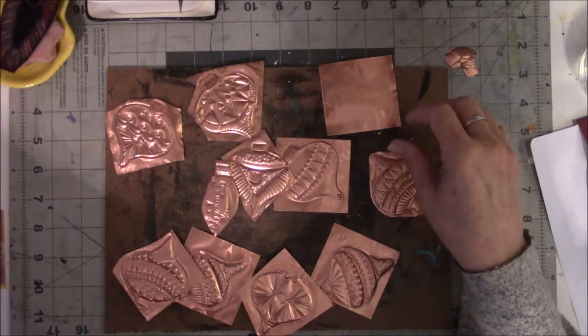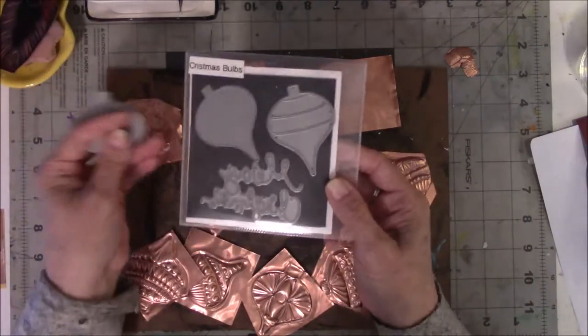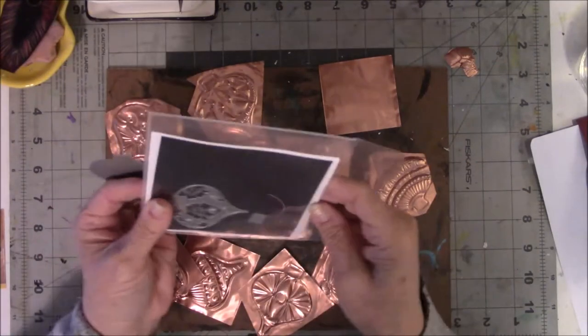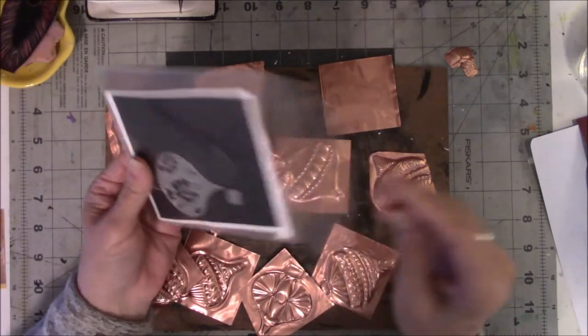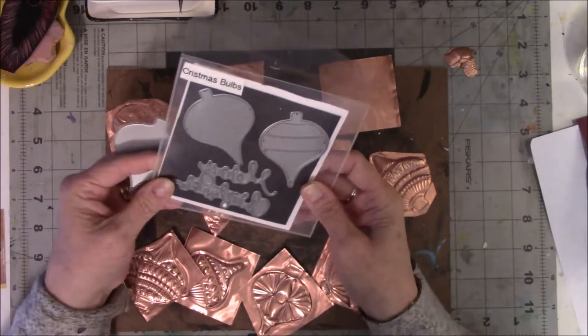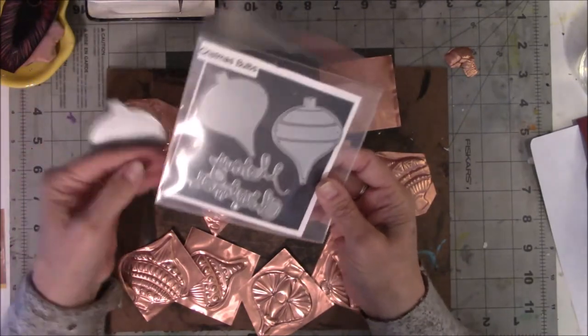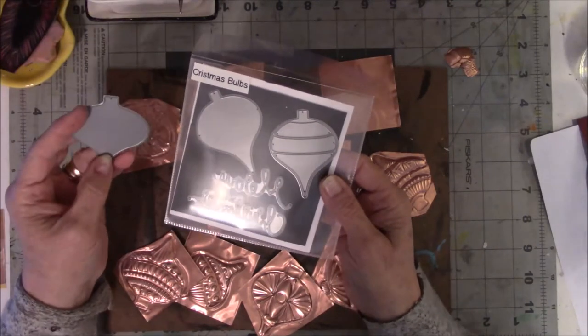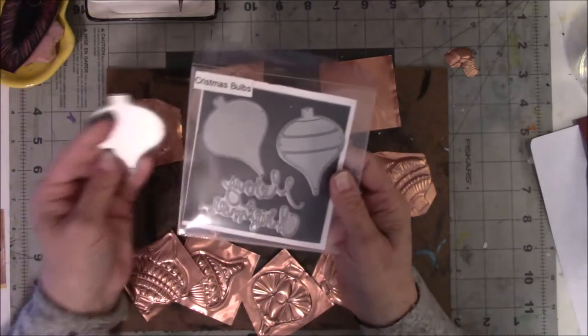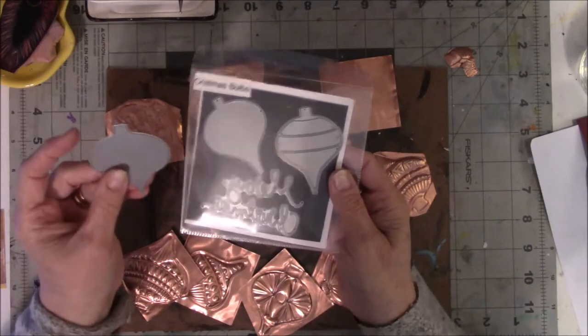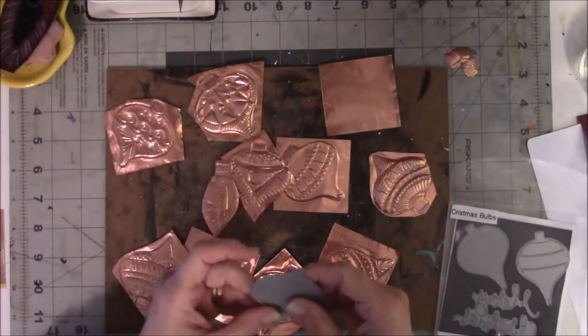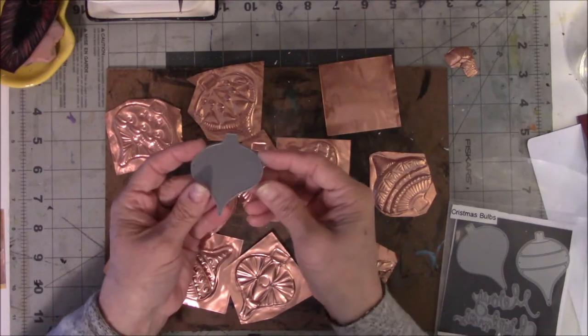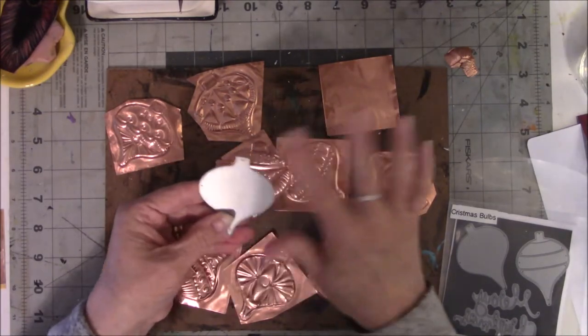I have a die set, and I didn't want to run it through the machine because I know that makes a funky indentation. But I wanted to trace them, so what I did was I took the die and turned it the opposite direction you need for cutting, you know, the completely flat side.